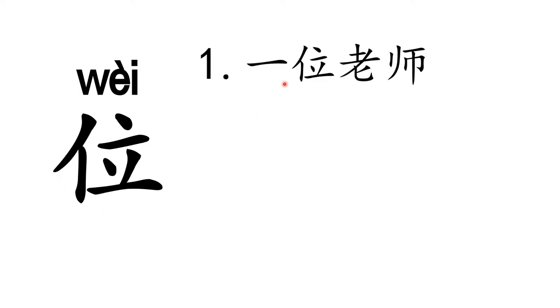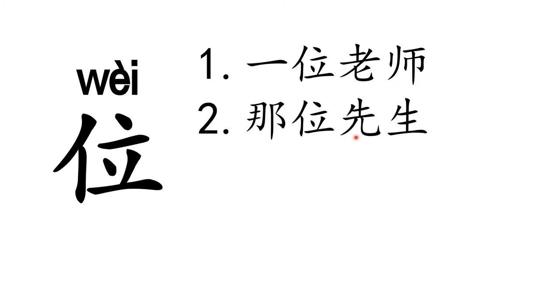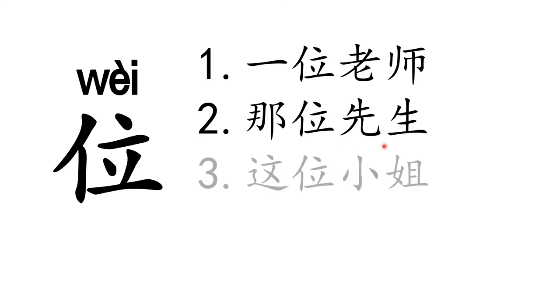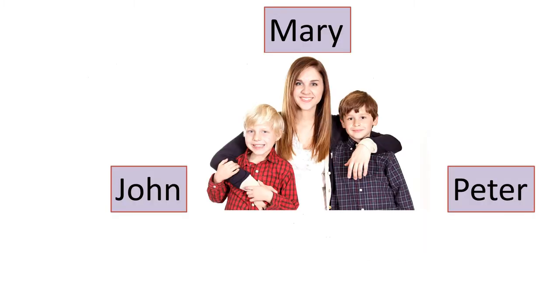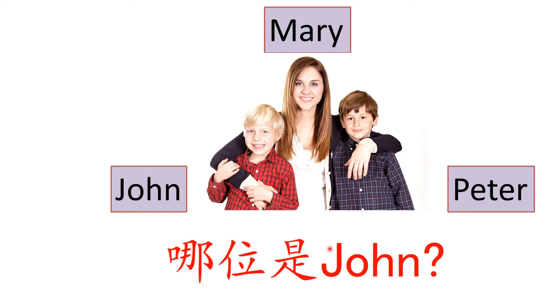Another measure word is 位, which is used for people. Example: 一位老师 means 'a teacher', 那位先生 means 'that mister', 这位小姐 means 'this miss'. 哪位 means 'which one?' 哪位是John? means 'Which one is John?'